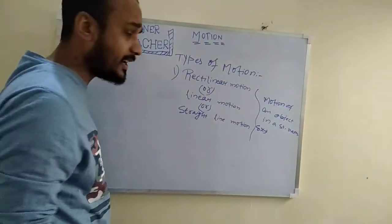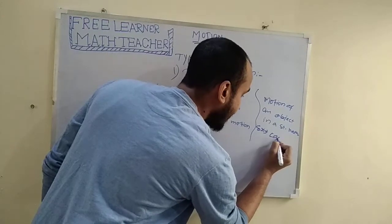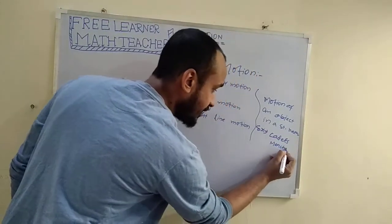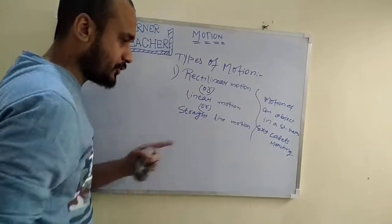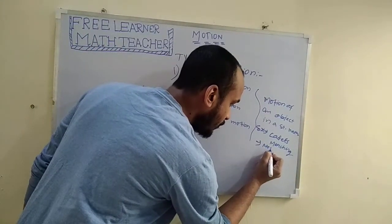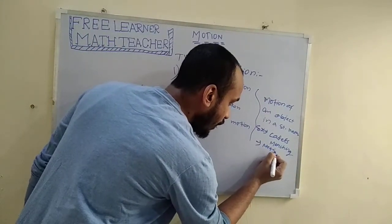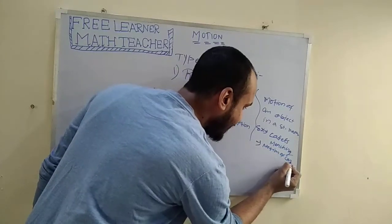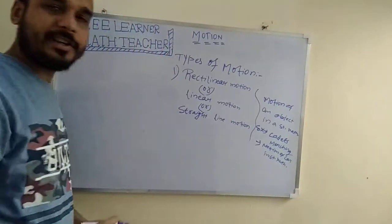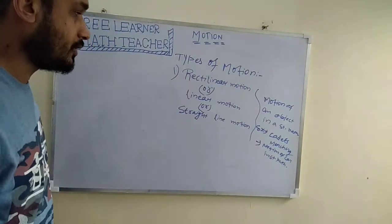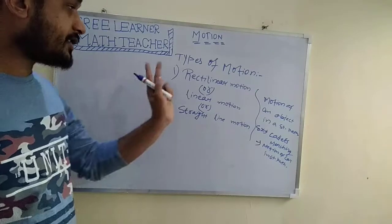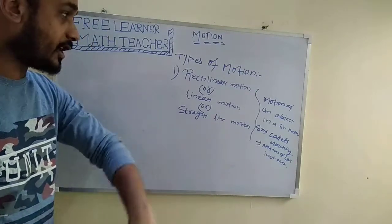Examples of rectilinear motion: simply cadets marching in a straight line. Likewise, the second example is motion of a car in a straight path. So this is all about the types of motion — rectilinear motion, linear motion, or straight line motion.